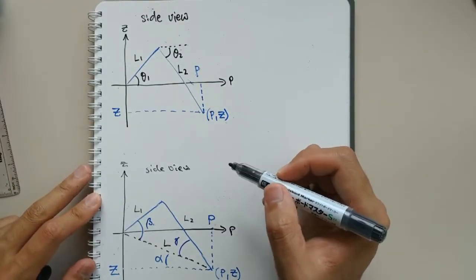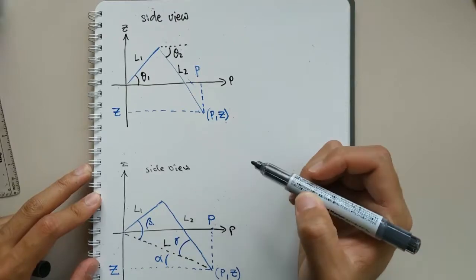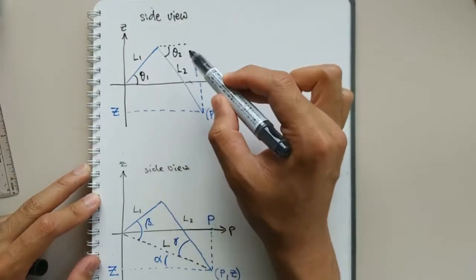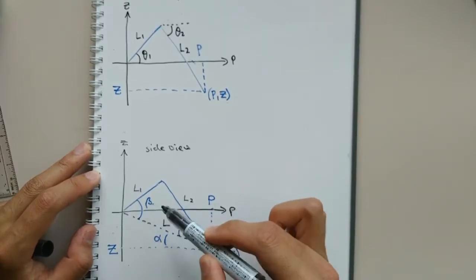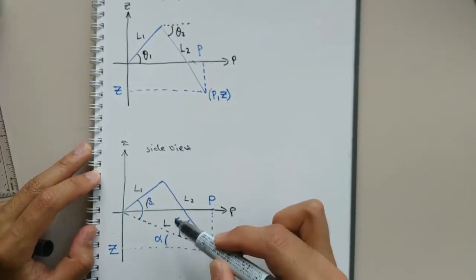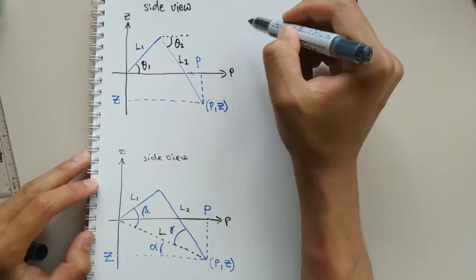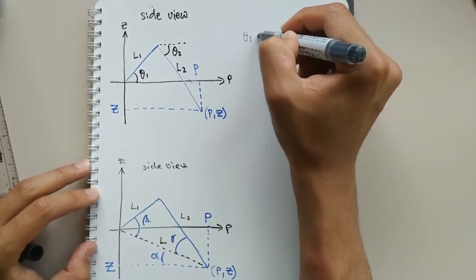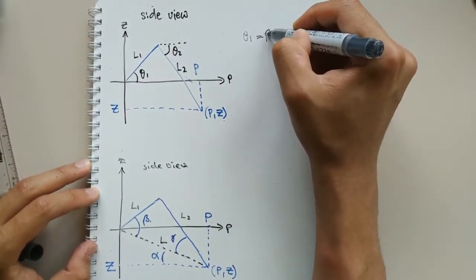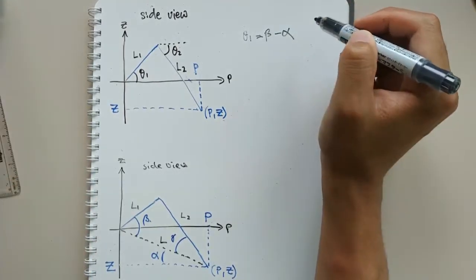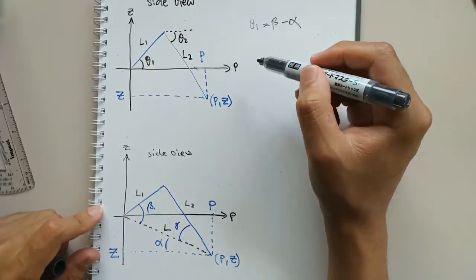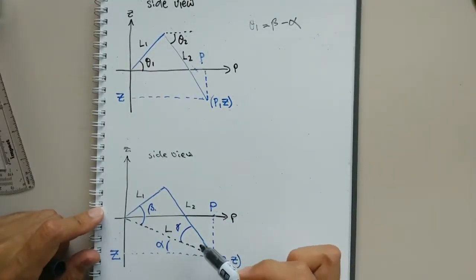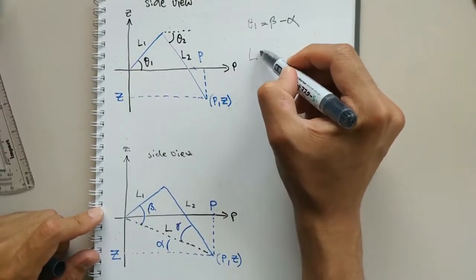Now we can start analyzing the side view to find theta 1 and theta 2. From this diagram, we can see that beta minus alpha is theta 1. To find beta and alpha, it is convenient to first find this length L using Pythagoras.